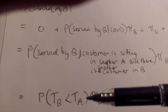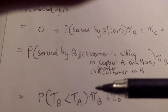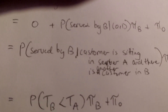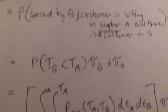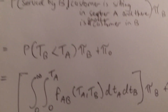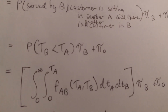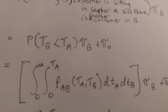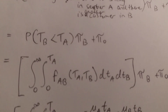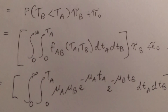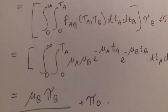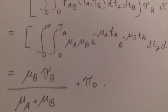We find this probability by looking at the joint density function of the system and integrating the joint exponential density function. Working through the integral, we arrive at a final result for the proportion of entering customers who receive service from B.